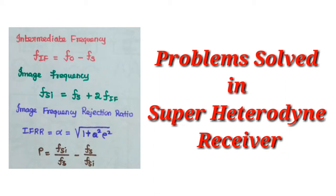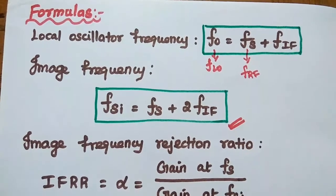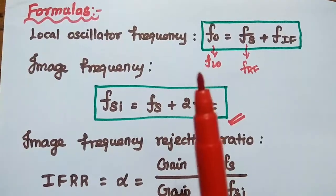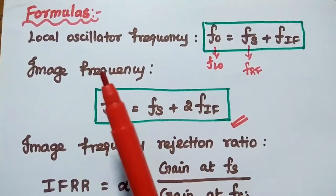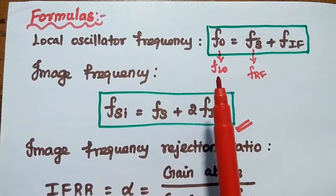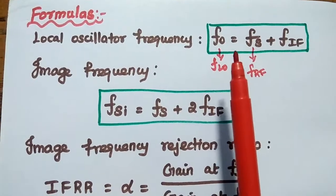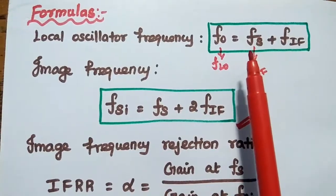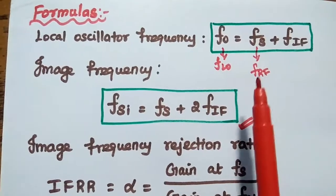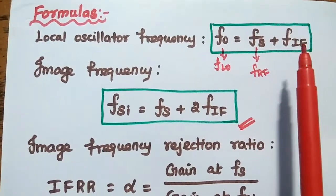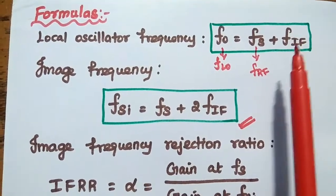Dear students, now we are going to solve important problems in the superheterodyne receiver. Let's start with the important formulas to be used. The local oscillator frequency F0, also represented as FLO, is equal to FS plus FIF, where FS is the signal frequency in the range of radio frequency, and IF means intermediate frequency.